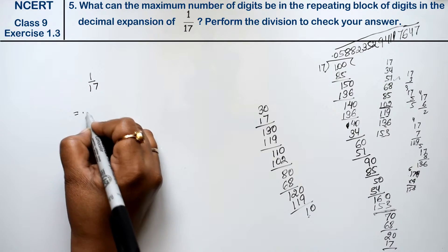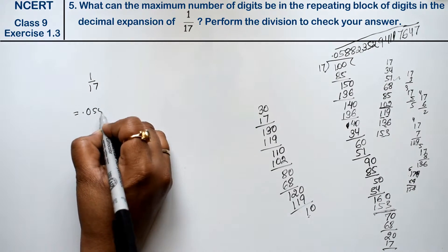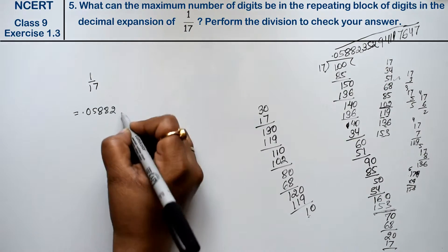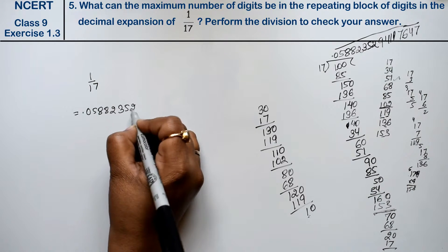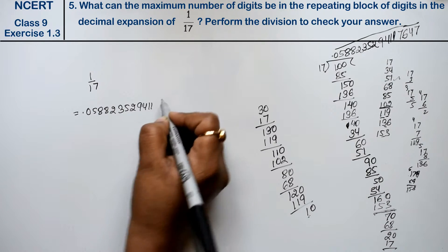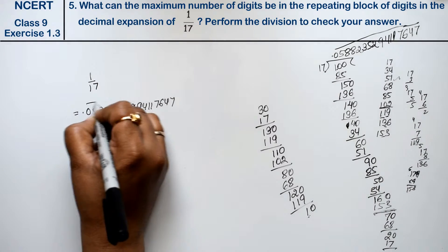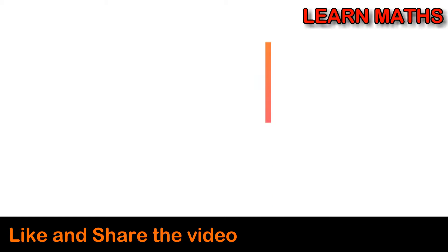So the answer is 0.0588235294117647 with a bar over the repeating digits. That is the answer. Thank you.